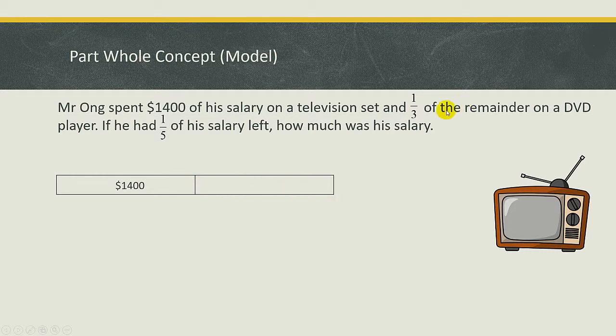And after the remainder, he spent one-third, right, on a DVD player. So it means that we need to cut this remainder into three different units. Okay, so it's one, two, and three. Okay, then from here you take away one-third. Okay, because one-third is spent on DVD player.